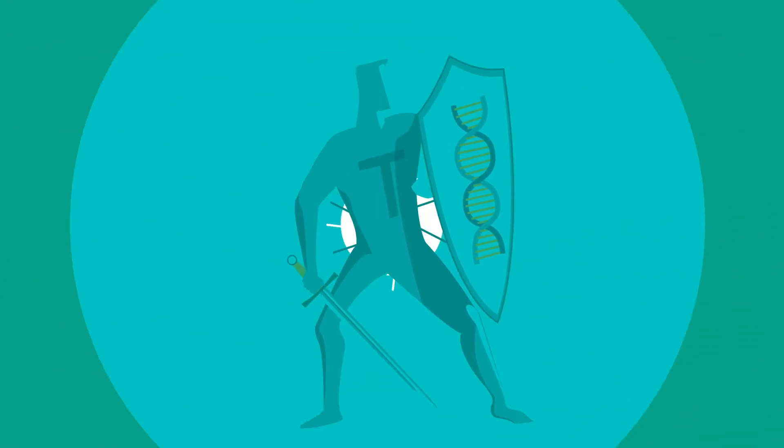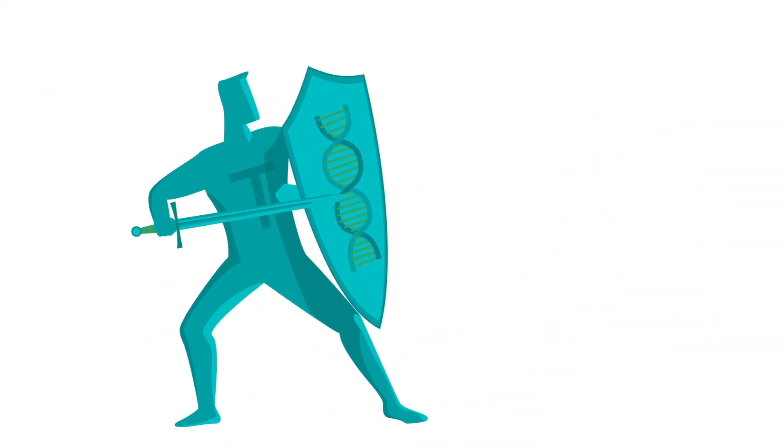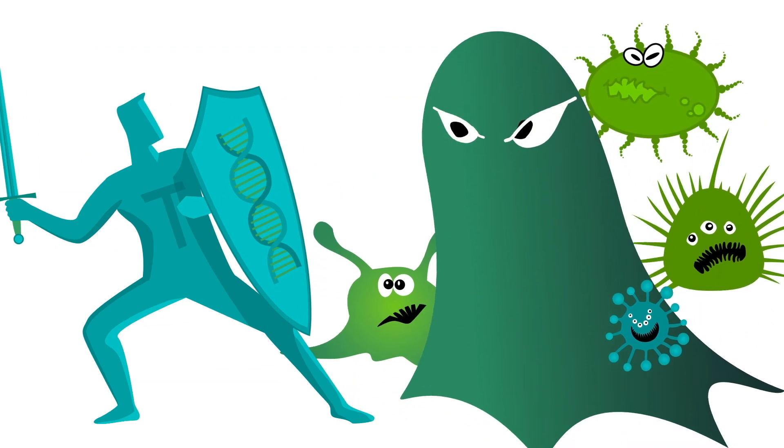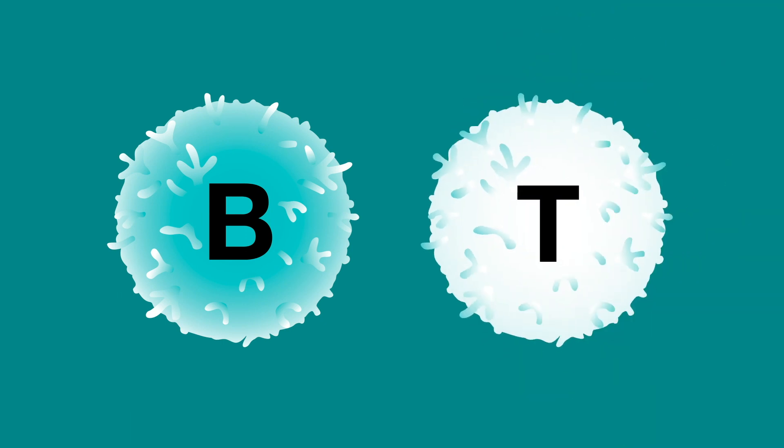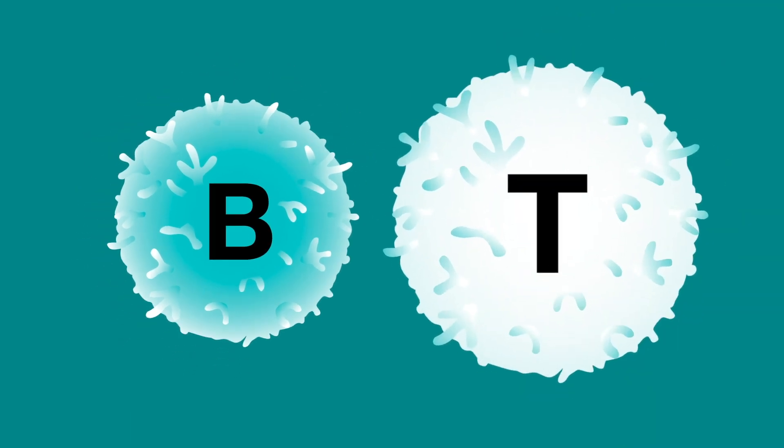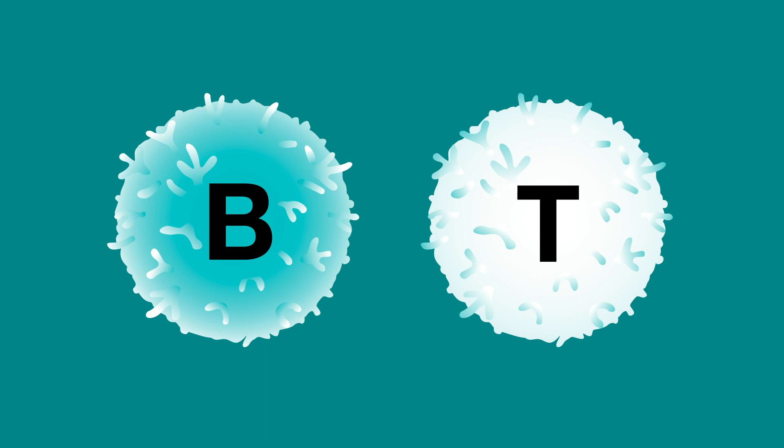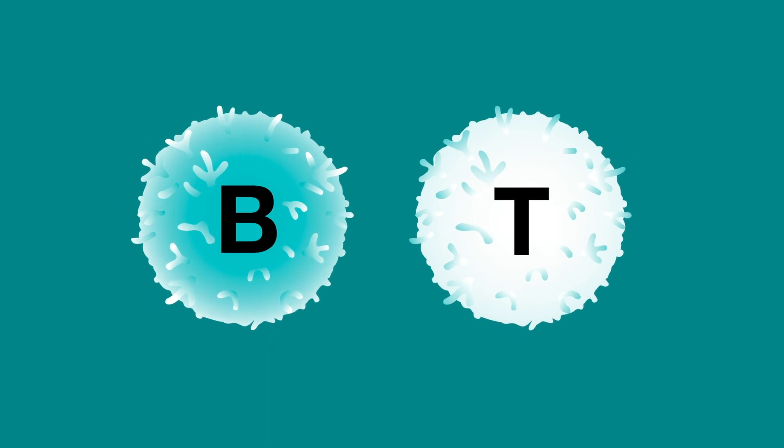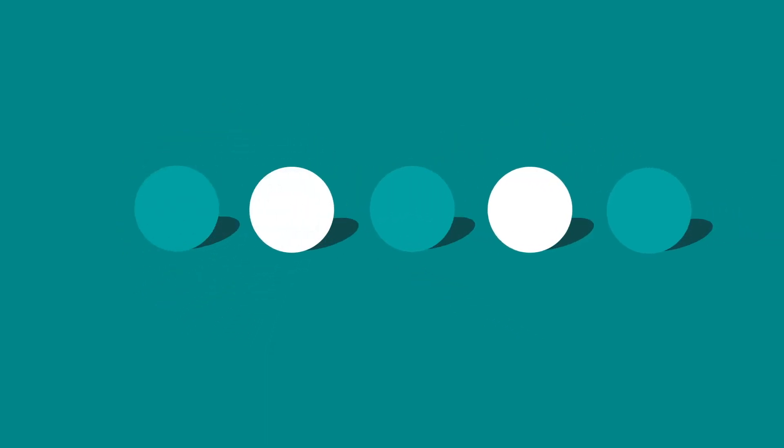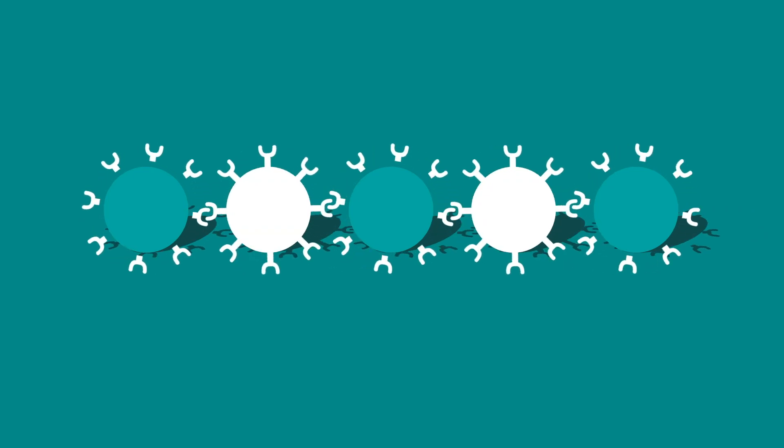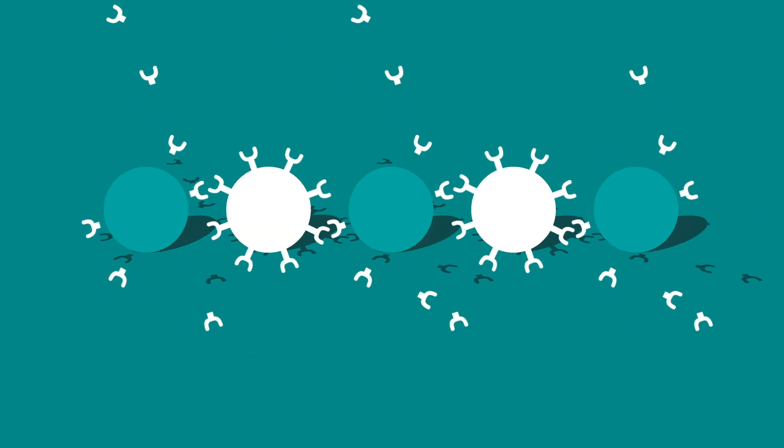Our immune system is primarily responsible for this variation in the response to different viruses and other bugs, and the main cells in our body that perform this function are B and T cells. What enables these B and T cells to uniquely respond to these various viruses and other bugs is closely associated with small homing receptors on their surface known as B and T cell receptors.